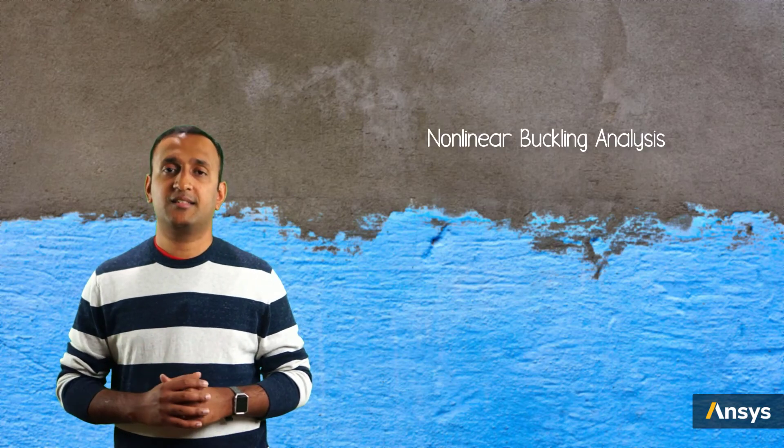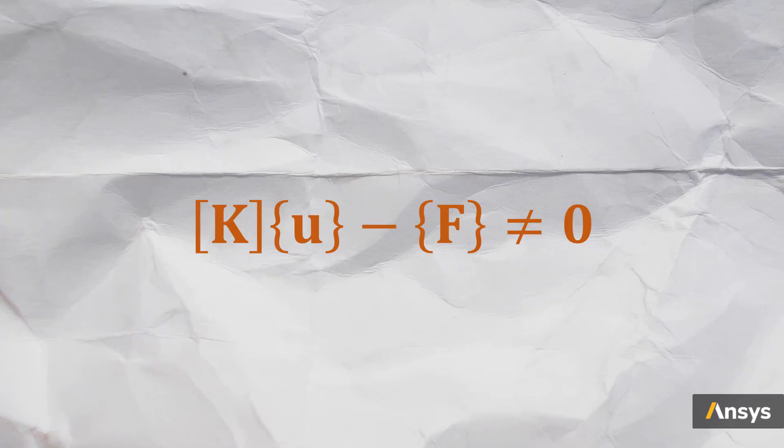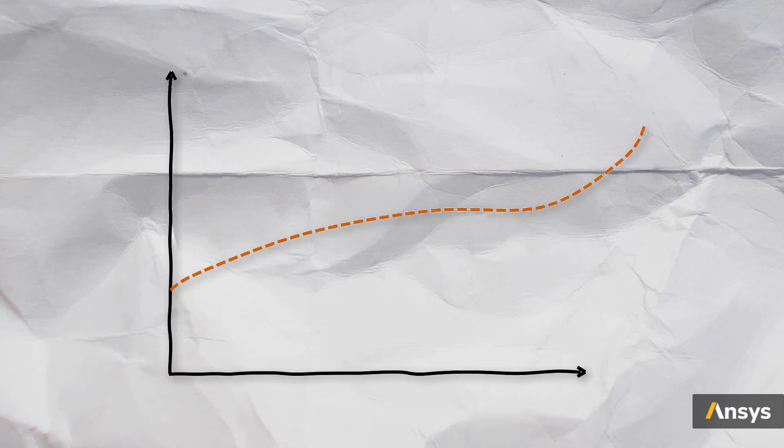Now, coming to the second method, which is a non-linear buckling analysis. Let's rewind to the governing equation of a static analysis. As discussed earlier, at the onset of buckling, the reaction force drops nearly to zero, and the applied load is not balanced. As a result, a numerical solution for such system using the Newton-Raphson method fails to converge.